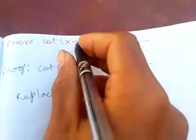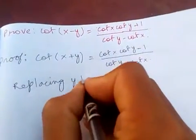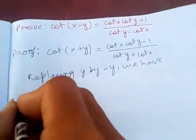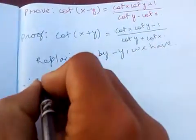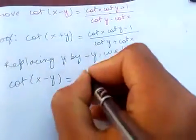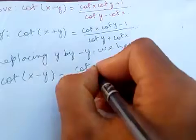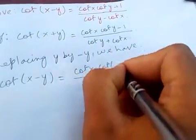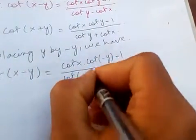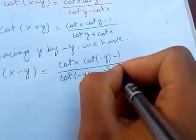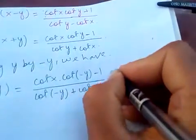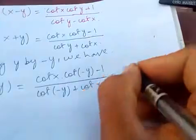Now in order to get minus Y, replacing Y by -Y, we have cot(x - y) is equal to, in place of Y let's place -Y, so cot(x) cot(-y) - 1 over cot(-y) + cot(x). Which is, we know cot(-y) is just -cot(y).